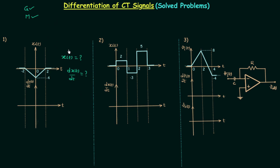In this lecture we will solve three problems, which you can see on your screen, by following only the graphical method. There is one constraint: the graphical method is only used for signals which are related to ramp and step, and in this lecture all the signals are related to ramp and step. So we can start with the first problem.